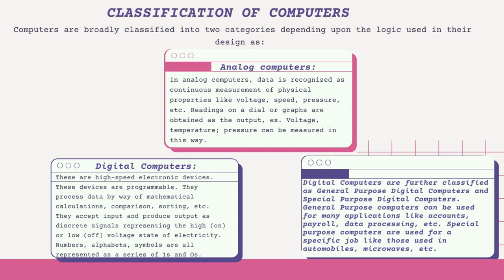Digital computers are high-speed electronic devices. These devices are programmable and process data by way of mathematical calculations, comparison, sorting, etc. They accept input and produce output as discrete signals representing the high (on) or low (off) voltage state of electricity. Numbers, alphabets, and symbols are all represented as a series of ones and zeros.